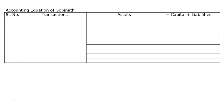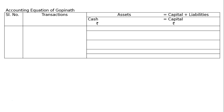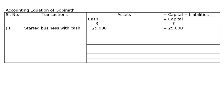This is question 2: show the accounting equation for the following transactions. This is the accounting equation of Gopinath, who started the business. We have to draw the format of accounting equation: serial number, transactions, assets equal to capital plus liabilities. First transaction — started business with cash rupees 25,000. Cash will be increased and capital will be increased; LHS is equal to RHS.